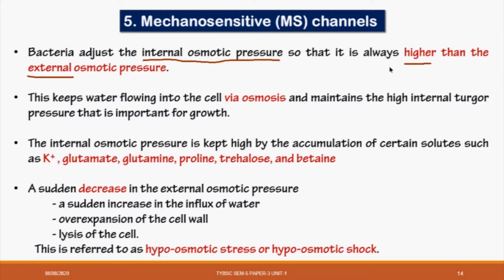So for keeping internal osmotic pressure high, the cell has to keep its solute concentration high — it cannot simply reduce water. What the cell will do is adjust its solute. When internal osmotic pressure is high, osmosis — the flow of water by itself based on concentration gradient — will drive water into the cell. Based on concentration gradient, osmosis causes water to enter the cell.